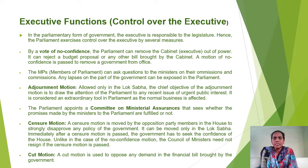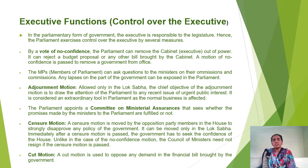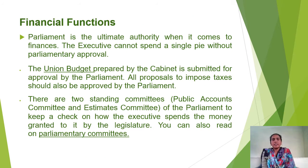Adjournment motion is an important way parliament exercises control over the executive, where the chief objective is to draw the attention of parliament to any recent issue of urgent public interest. Parliament also appoints a committee on ministerial assurance to see whether promises made by ministers are fulfilled. A censure motion is moved by opposition party members to strongly disapprove any policy of the government; it can be moved only in the Lok Sabha. Unlike a no-confidence motion, the Council of Ministers need not resign if a censure motion is passed. A cut motion is used to oppose any demand in a financial bill brought up by the government.